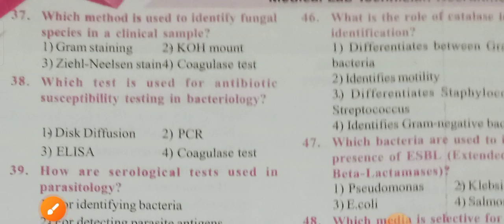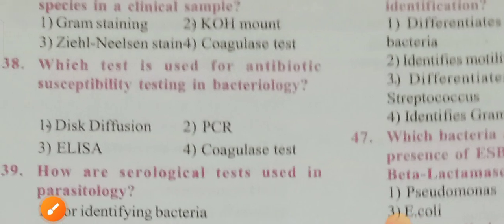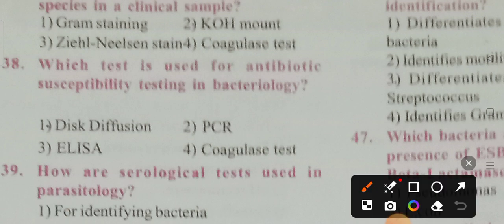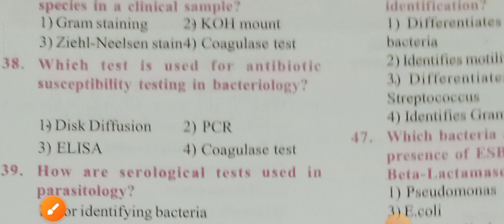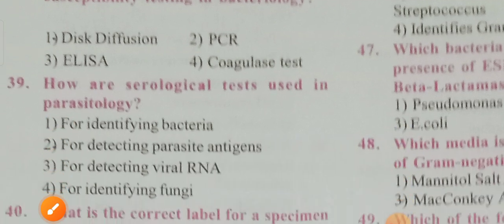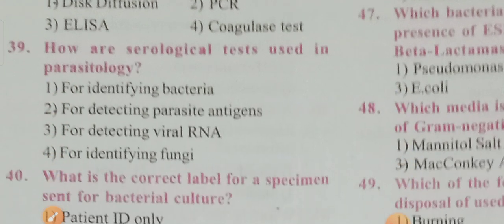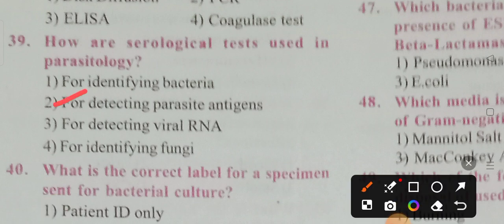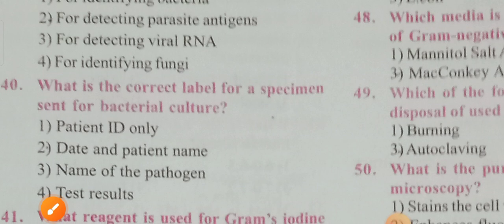Which test is used for antibiotic susceptibility testing in microbiology? Options: disc diffusion, PCR, ELISA, coagulase test. Option 1 is the correct answer — disc diffusion test. How are serological tests used in parasitology? Option 2 is the correct answer — for detecting parasite antigens.